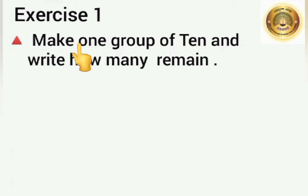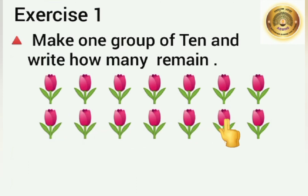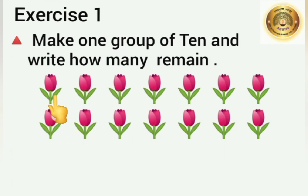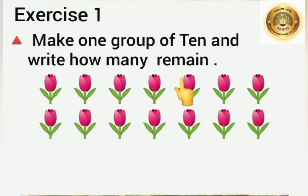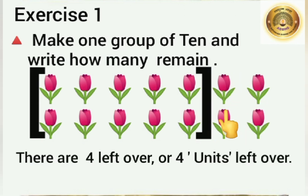Exercise 1: Make 1 group of 10 and write how many remain. Here, 14 objects — let's count: 1, 2, 3, 4, 5, 6, 7, 8, 9, 10, 11, 12, 13, 14. There are 14 flowers. Here, we have to make 1 group of 10. So let's count 10 objects: 1, 2, 3, 4, 5, 6, 7, 8, 9, 10. Now we made 1 group of 10. Students, tell me how many remain. Yes — 4. There are 4 left over, or 4 units left over.